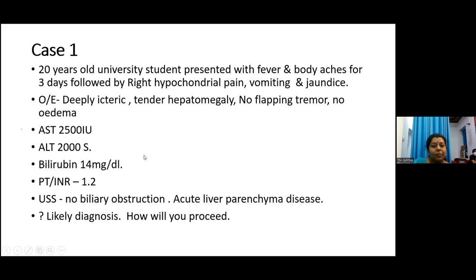Now I will discuss a few clinical cases. Case one: a 20-year-old university student presented with fever and body aches for three days followed by right hypochondrial pain, vomiting, and jaundice. On examination, she was deeply jaundiced with tender hepatomegaly and no flapping tremors or edema. Investigations: AST 2500, ALT 2000, serum bilirubin 14 mg/dL, INR 1.2. Ultrasound scan showed no biliary obstruction, consistent with acute liver parenchymal disease.